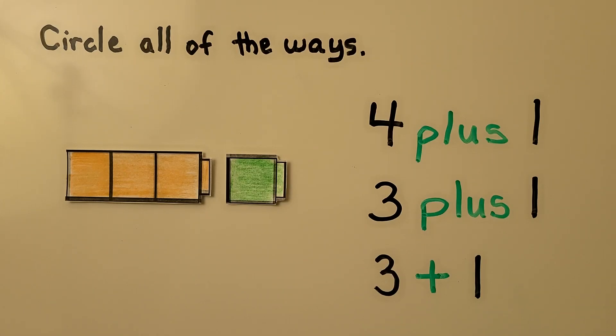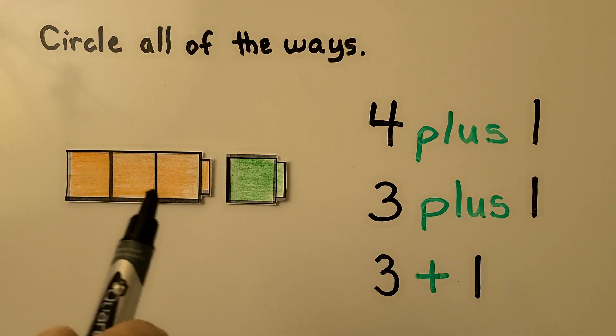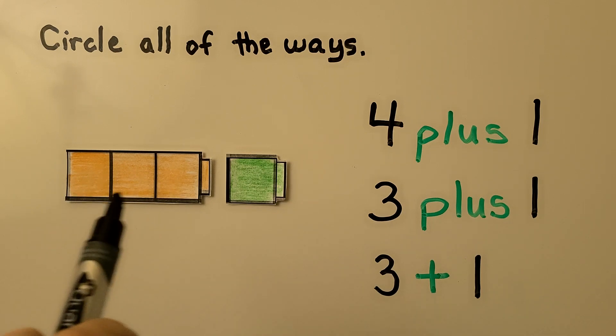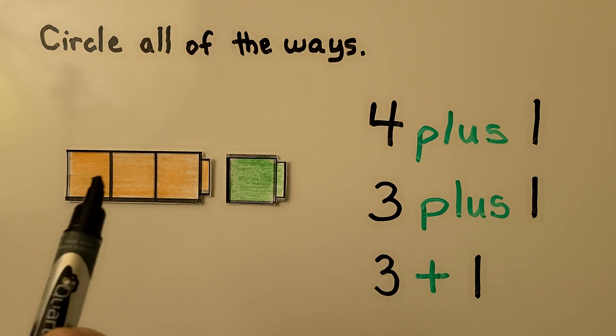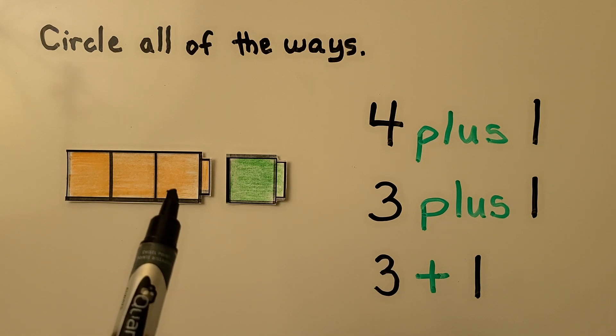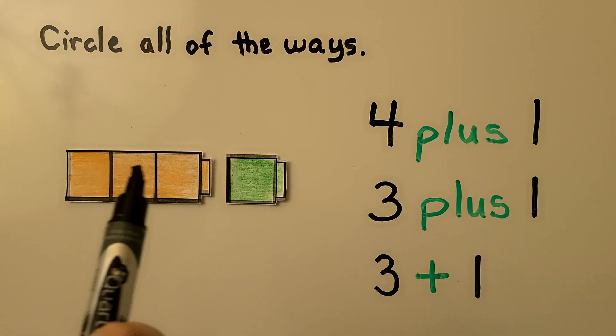Here we need to circle all of the ways that show how many in all. We have orange cubes and green. Which numbers do the cubes show? We have one, two, three orange and one green. The numbers should match each group. The first number matches the orange group, three.